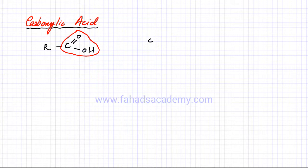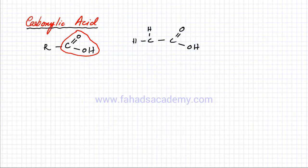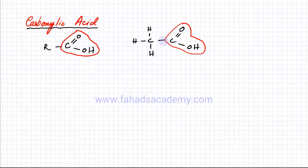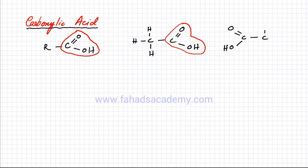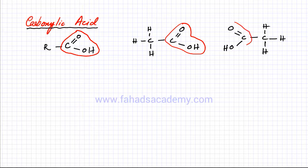Let's draw a carboxylic acid with two carbon atoms. There's a C double bond O and an OH group attached to one carbon atom, and the rest is the usual carbon chain. This molecule is a carboxylic acid because it has this arrangement. Note that it's not necessary to draw the functional group on the right — you can draw an inverted version with C double bond O and OH on the left side. These two molecules are exactly the same; they are just flipped versions of each other.